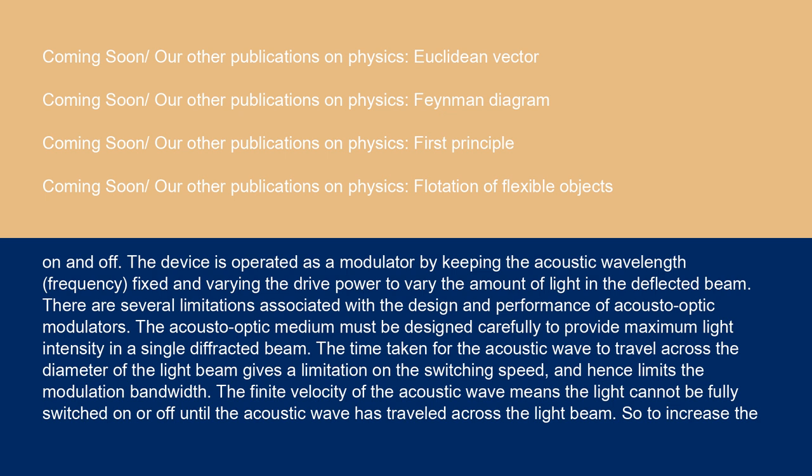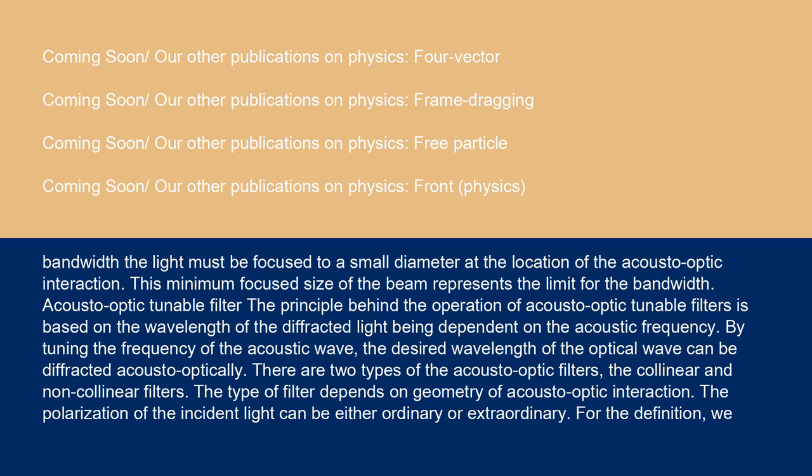There are several limitations associated with the design and performance of acousto-optic modulators. The acousto-optic medium must be designed carefully to provide maximum light intensity in a single diffracted beam. The time taken for the acoustic wave to travel across the diameter of the light beam gives a limitation on the switching speed and hence limits the modulation bandwidth. The finite velocity of the acoustic wave means the light cannot be fully switched on or off until the acoustic wave has traveled across the light beam.